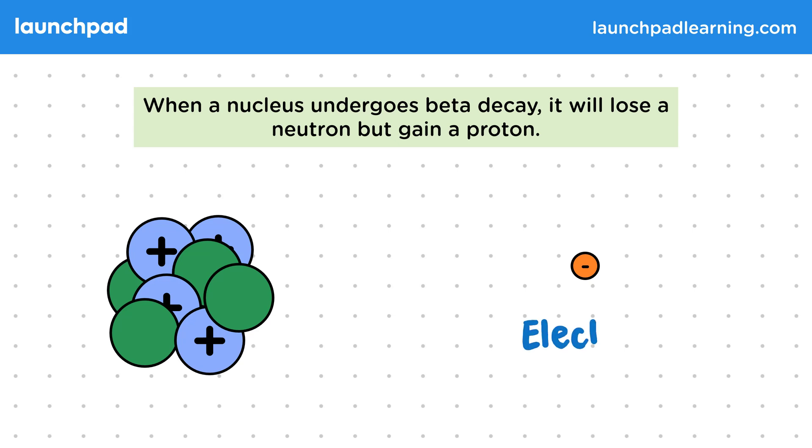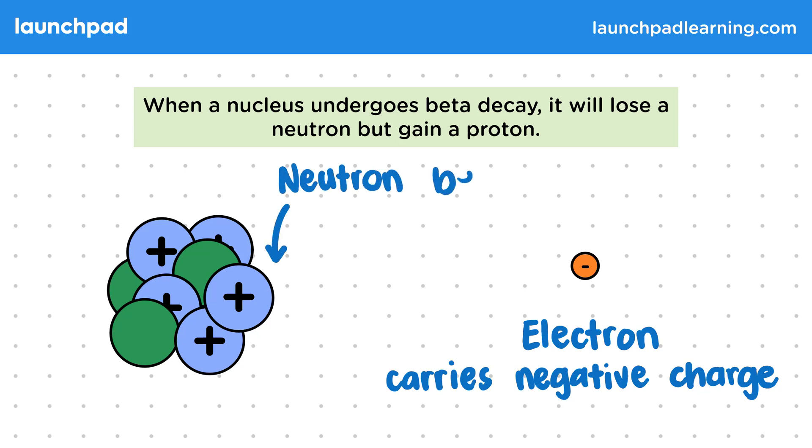A beta particle is simply a free electron. So a beta particle carries a negative charge in the same way as an electron. Within the nucleus, a neutron, which is now positively charged, becomes a proton. But you don't need to understand how the neutron changes into a proton for your exams.